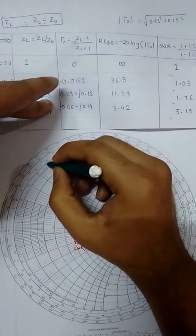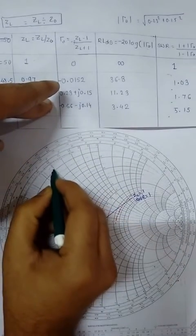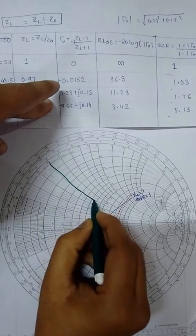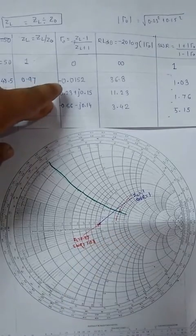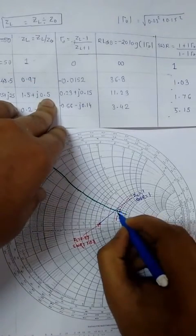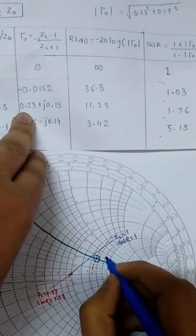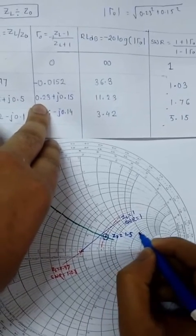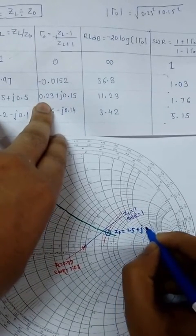And after that, j0.5. You can see j0.5 is there. I'm extending in this way. It intercepts here. We got this ZL of 1.5 plus j0.5.